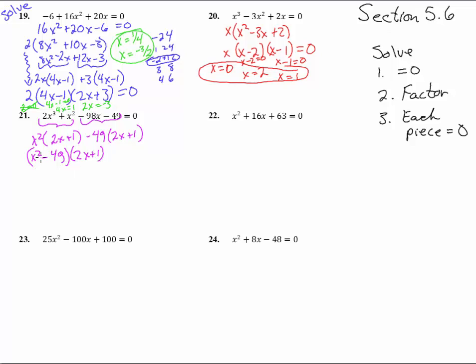And this can still go down. This is a difference, subtraction of two squares. So we get x plus 7, x minus 7, and then your 2x plus 1 right there. And that's all equal to 0.